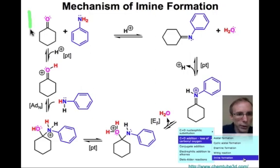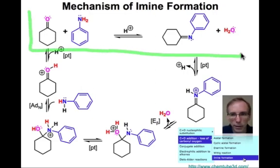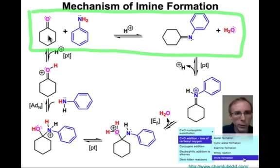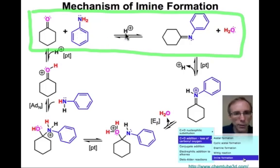Let's take a look at the reaction that generates the imine. The stoichiometry is shown at the top here, where we take a carbonyl like this cyclohexanone — this ketone — combine it with this primary amine. This one happens to be an aniline, in the presence of an acid catalyst, to make the imine that's shown here with water as a byproduct.